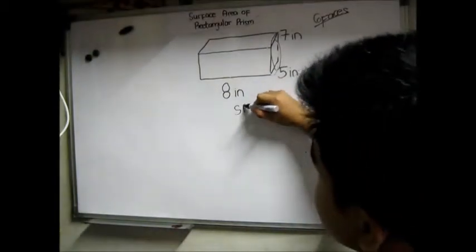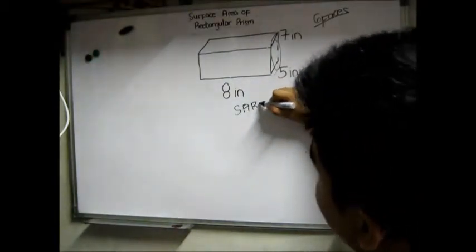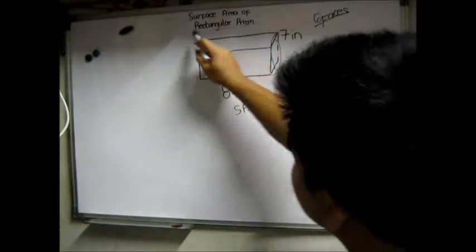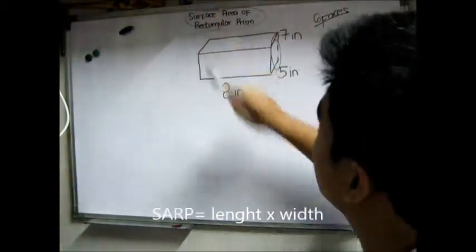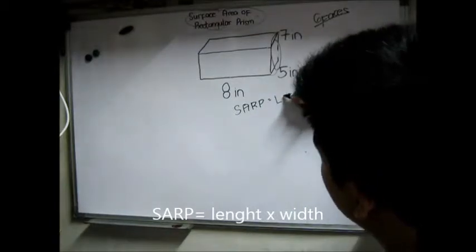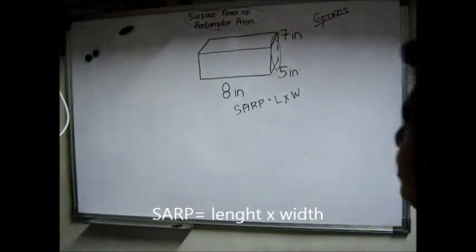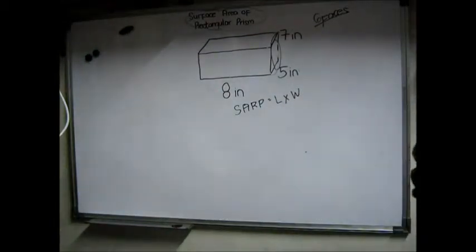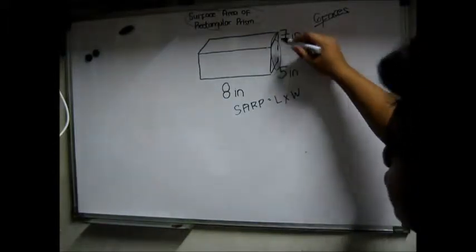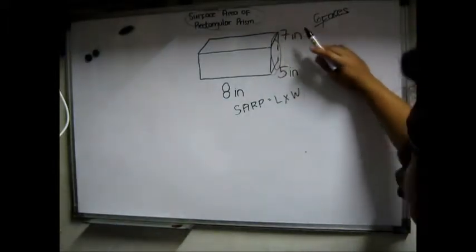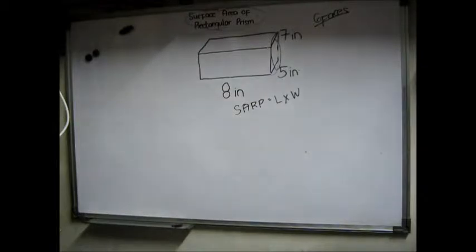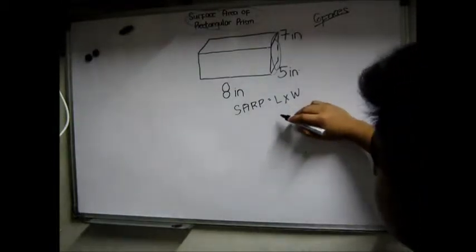Our formula for solving the surface area of rectangular prism is SARP, which stands for Surface Area of Rectangular Prism equals length times width. Now we're going to find the area of this first face. We have to do this very carefully step by step.